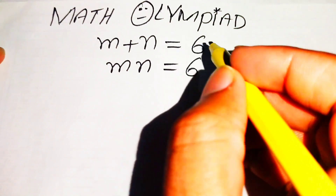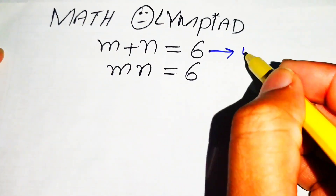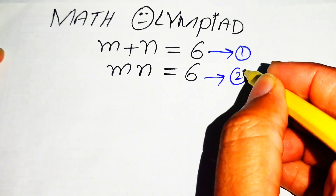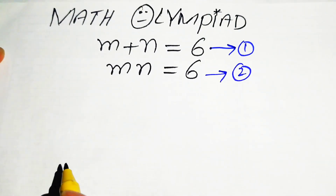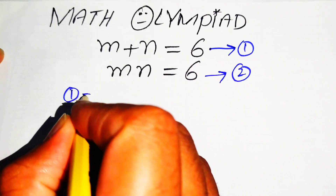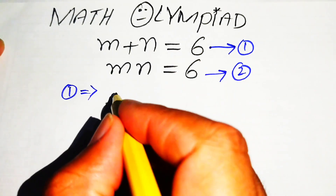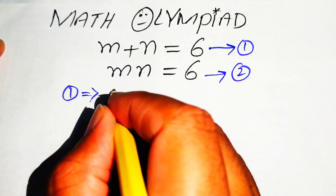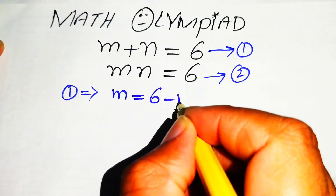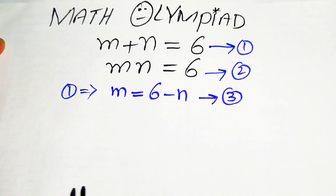We call m plus n equals 6 as equation 1, and m times n equals 6 as equation 2. Focusing on equation 1, we move n to the right-hand side and obtain m equals 6 minus n, which we call equation 3.